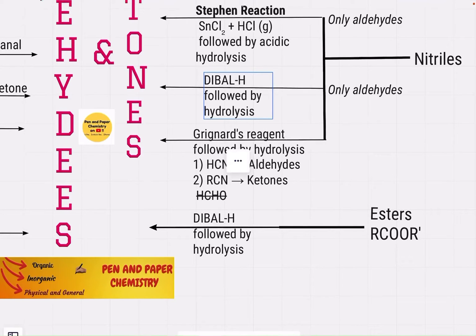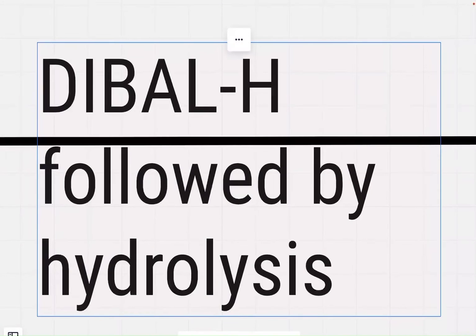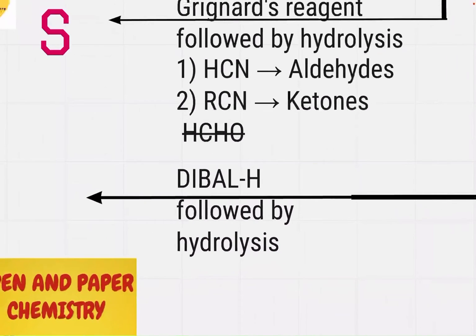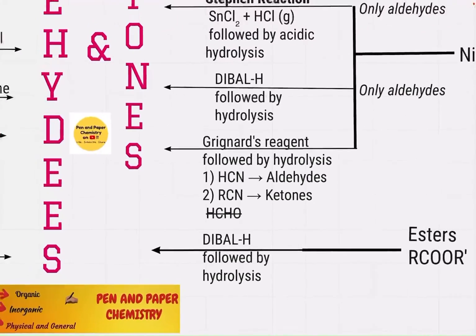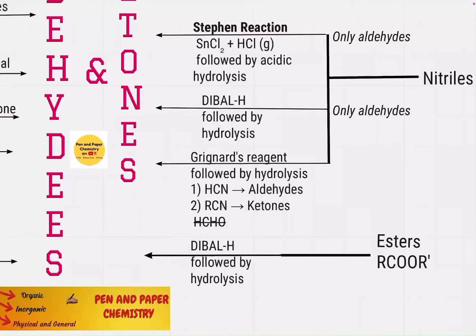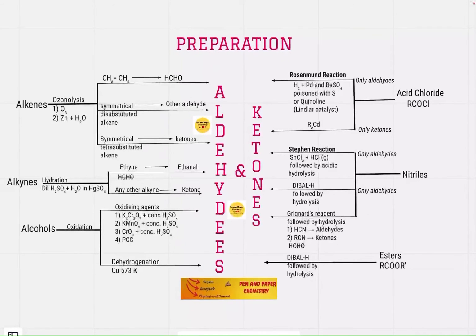Esters can also be reduced by DIBAL. So DIBAL is used in two different places: reducing nitriles and reducing esters. That is the special capability of DIBAL — to reduce carbonyl compounds and nitriles in order to obtain aldehydes. I will keep the flowchart on the screen so you can make a note or take a screenshot.